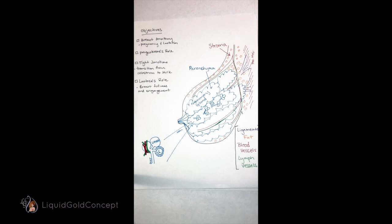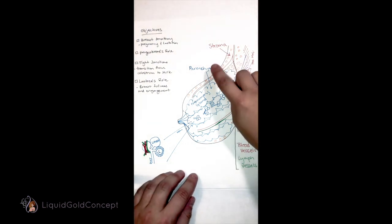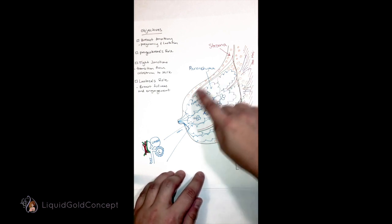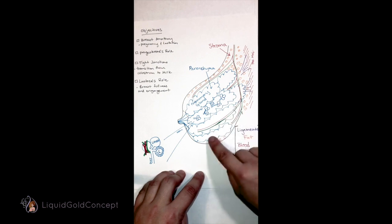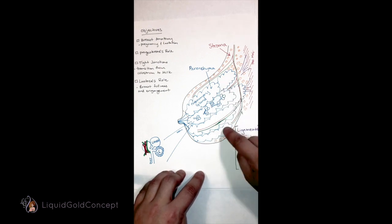Your breasts are composed of two main types of tissue: stroma and parenchyma. The parenchyma is the glandular tissue, the mammary glands. This is the part of your breast responsible for making milk. I've represented it here in blue.